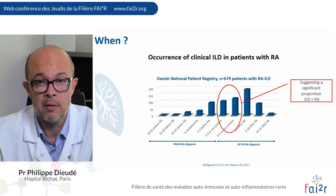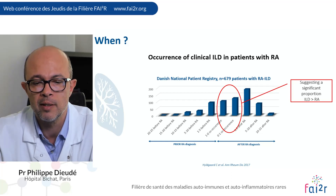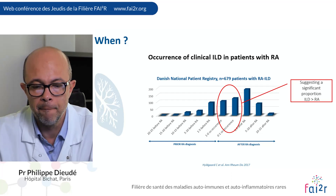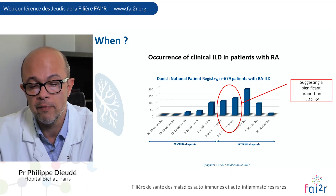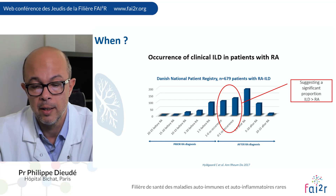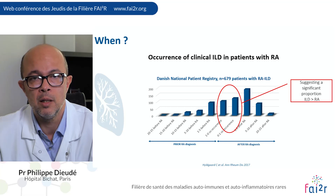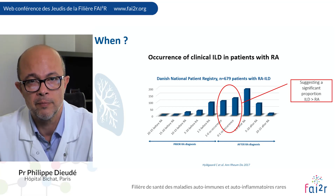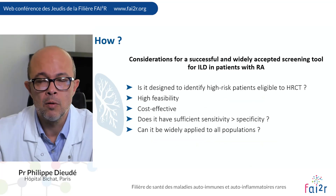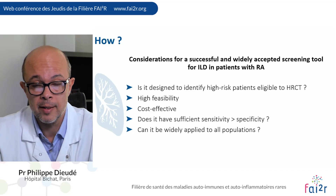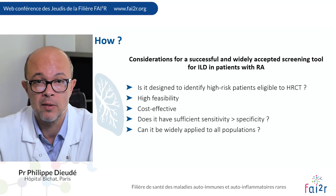When screening should be performed is a challenging question because we don't really know the natural history of ILD in patients with RA. We have some clues from registry data — for example, the Danish national registry — and a significant proportion of patients had ILD before RA, suggesting that screening could be performed at the early stage of RA. Anyway, the optimal time for screening is unknown and remains to be determined by prospective studies.